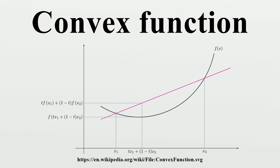Properties: Suppose f is a function of one real variable defined on an interval, and let r be the slope of the line between two points on the graph. Note that the function r is symmetric in x1, x2. f is convex if and only if r is monotonically non-decreasing in x1, for any fixed x2. This characterization of convexity is quite useful to prove the following results.